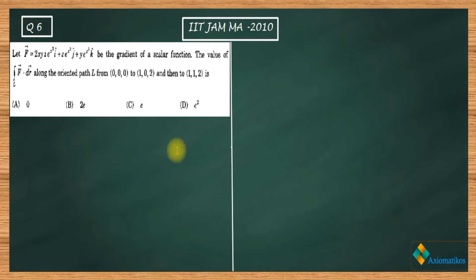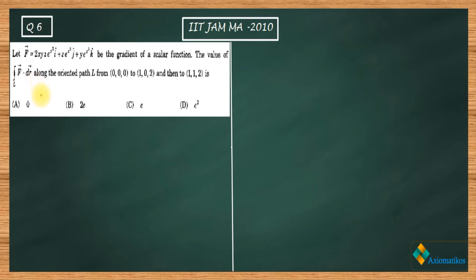This is a calculus problem. It says that let f vector — a three-dimensional vector — be the gradient vector of a scalar function. Then we have to find the value of the line integral f dot dr along the oriented path l from (0,0,0) to (1,0,2) and then to (1,1,2).